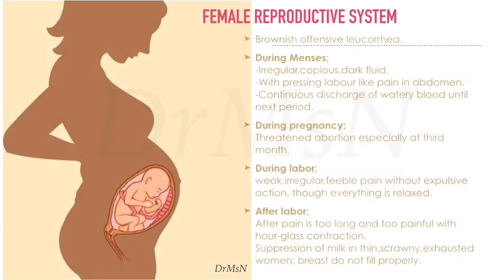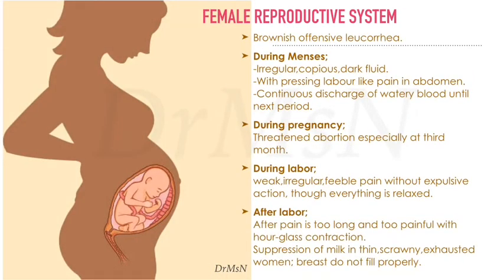Lastly, conditions in the female reproductive system, which we can discuss in four stages: during menses, during pregnancy, during labor, and after labor. During menses: irregular, copious, dark fluid with pressing labor-like pain in the abdomen; continuous discharge of watery blood until the next period. During pregnancy: threatened abortion especially at the third month. During labor: weak, irregular, feeble pains without expulsive action, though everything is relaxed. After labor: after-pains are too long and too painful with hourglass contraction. Suppression of milk in thin, scrawny, exhausted women, and breasts do not fill properly — this is very important.